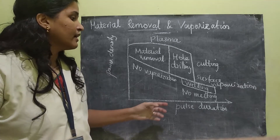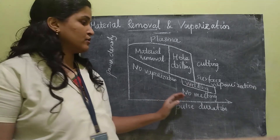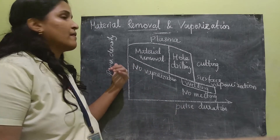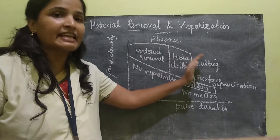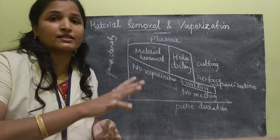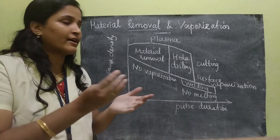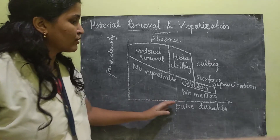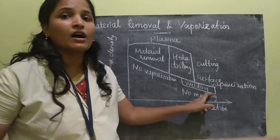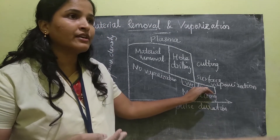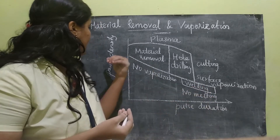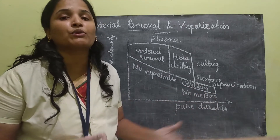Now let's see a graph showing the plot of pulse duration versus power density. This graph shows the various regions where laser material processing can be done. There is a line showing the melting threshold. If the power density is below this melting line, what will happen?